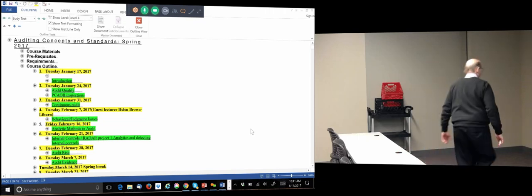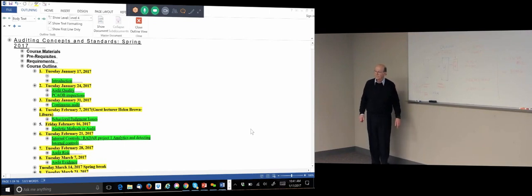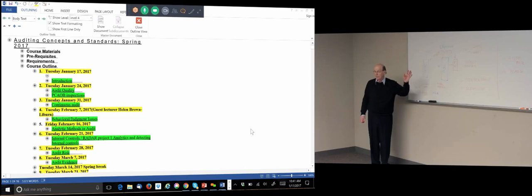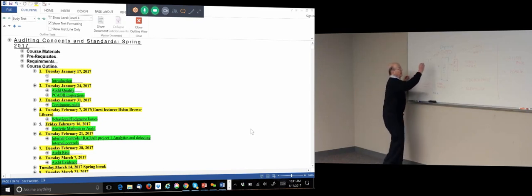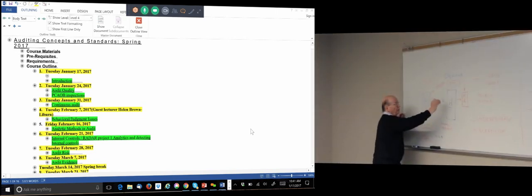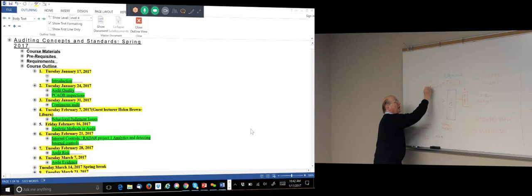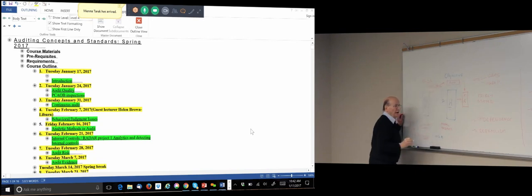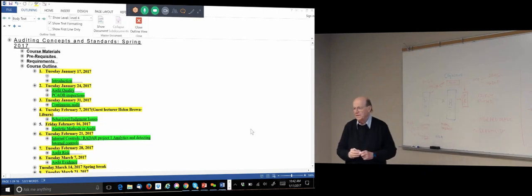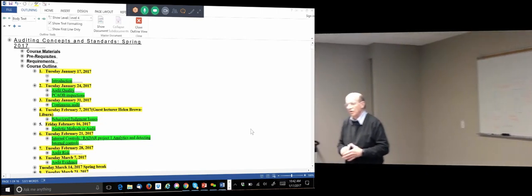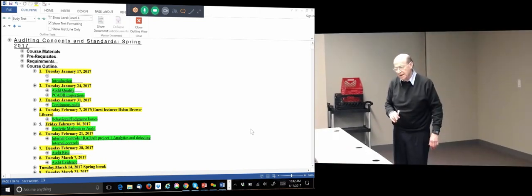How independent are internal auditors? They typically report to two parties — the CFO and the board. Reporting to the board provides another layer of governance. The board typically will have an independent audit committee and will probably have an independent compensation committee, but not necessarily. So these are some generic setups and companies will do different things.